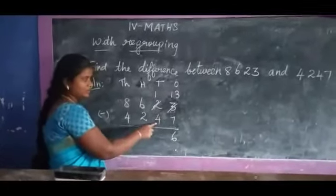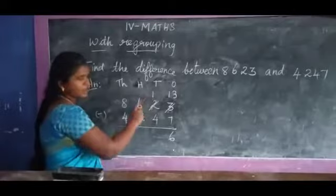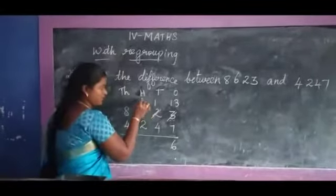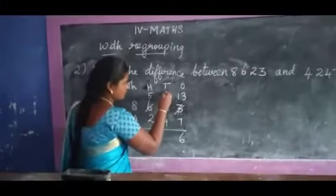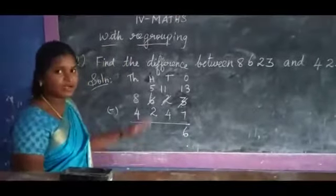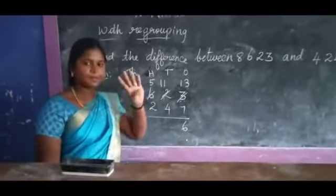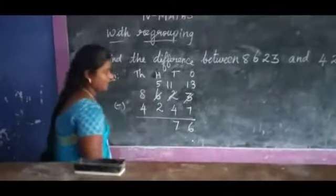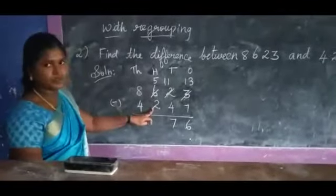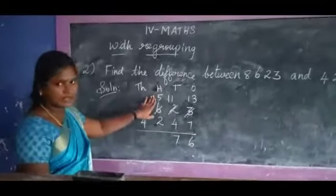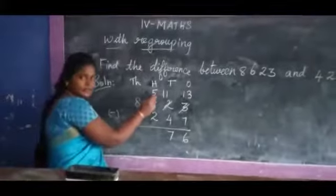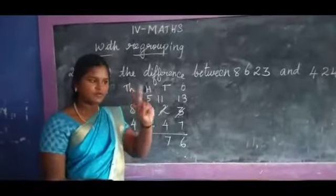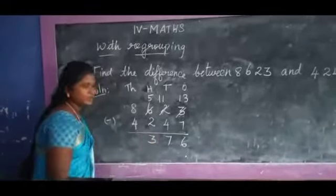Next, 1 subtract 4: 1 is small, so you have to borrow again. 1 becomes 11. 11 in the mind, 4 in the finger: 11 before — 10, 9, 8, 7. Answer is 7. Next, 5 subtract 2 subtract 1: 5 in the mind, 2 in the finger — 5 before, 4, 3. Balance 3, answer is 3.